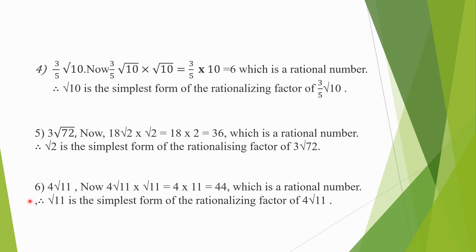Sixth question: 4√11. We will multiply with √11 so that we get 4 multiplied to 11, that is equal to 44. Again, 44 is a rational number. Therefore √11 is the simplest form of rationalizing factor of 4√11.